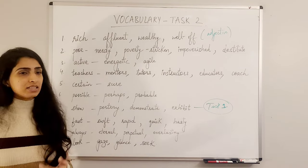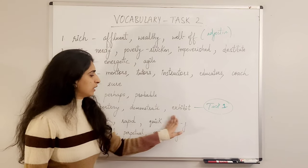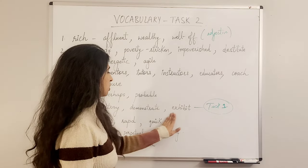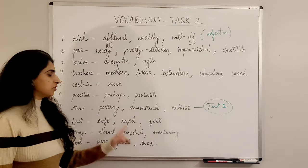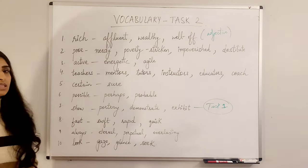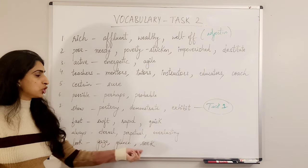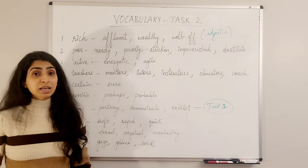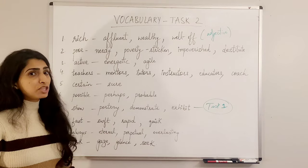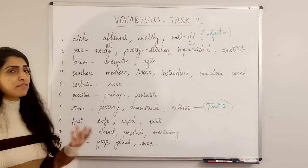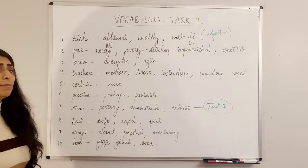'Fast' — synonyms: swift, rapid, quick. Note that these don't always work in all contexts, so use them carefully. 'Always' or 'eternal' — synonyms: perpetual, everlasting. For example: the love that parents give to their child is eternal, is perpetual, is everlasting, or it lasts forever — it is always there.